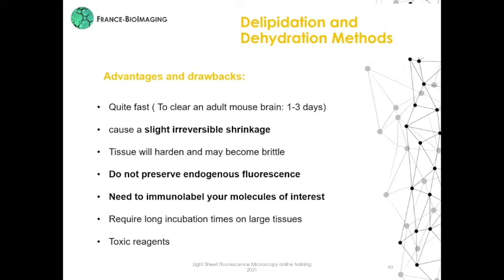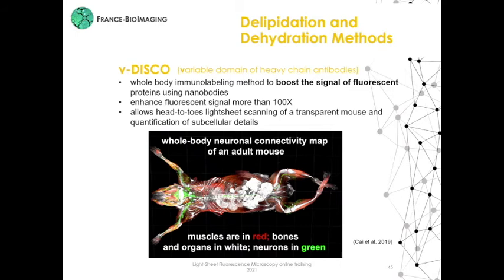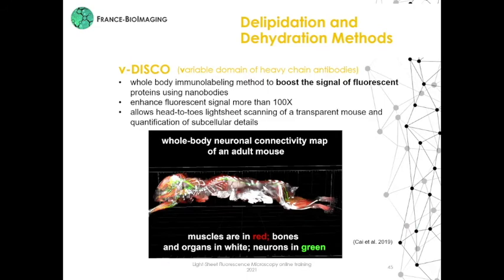To go further with the DISCO method, we can find different variants like U-DISCO for Ultimate DISCO. This method shrinks tissue dramatically and allows easier imaging for entire organs and organisms. There is also the B-DISCO technique, which allows whole-body light-sheet scanning of transparent mice. This technique boosts the signal of fluorescent proteins using nano-bodies. On this video, you can observe muscles in red, bones and organs in white, and neurons in green.